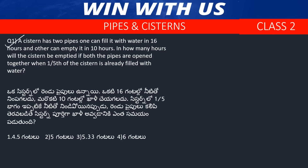Question number 1. The system has two pipes. One can fill the tank in 16 hours; the other can empty it in 10 hours. In how many hours will the tank be emptied if both pipes are open together?